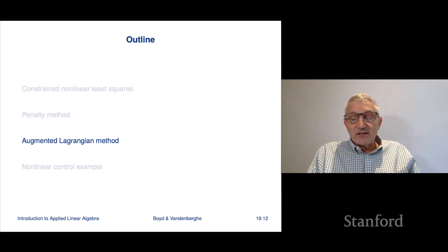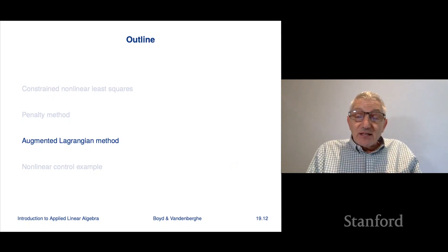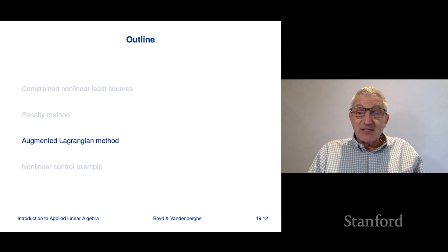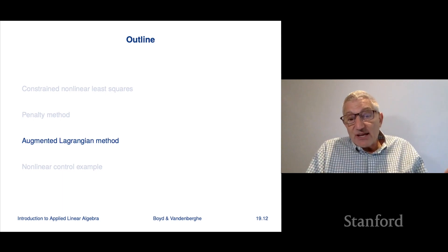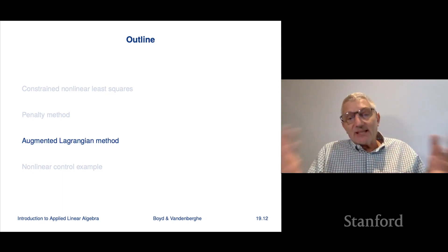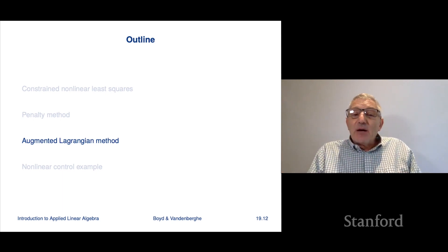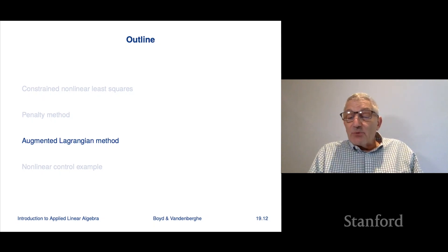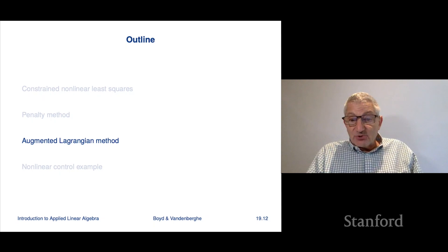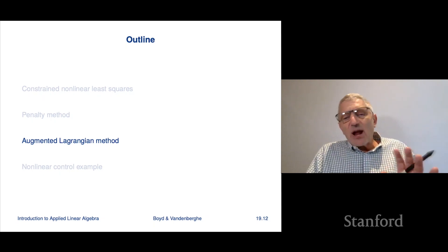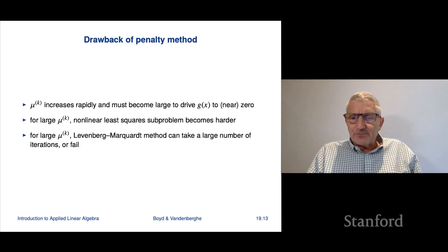The next section is on the augmented Lagrangian method, which basically is an improvement on the penalty method. Specifically, it's a method that has all the benefits of the penalty method, which is to say it works, or at least as a heuristic it works. But it doesn't require that parameter mu to become infinitely large before you get a good solution. And in practice, it also actually works better.